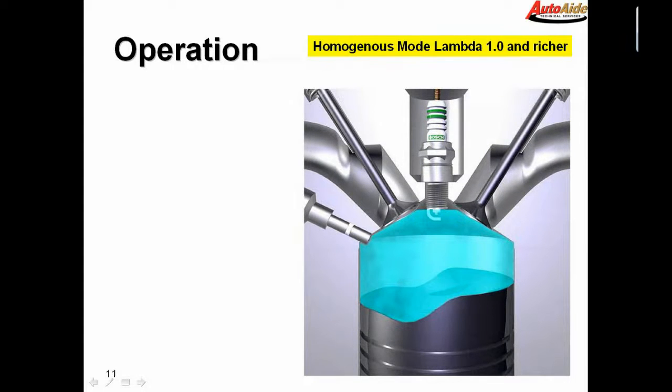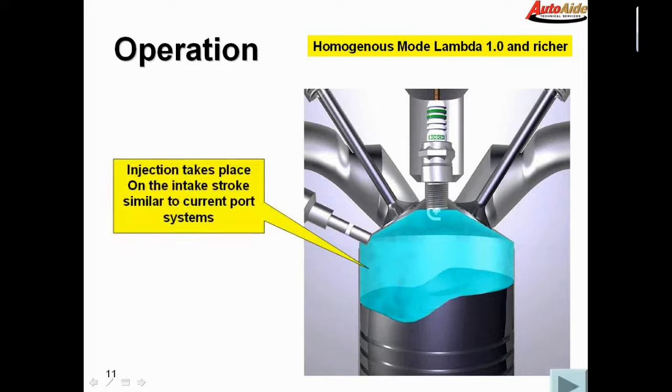It will switch over to homogeneous mode. Homogeneous mode is basically the mode we've been dealing with all along. Stoichiometric or 14.7 to 1 or lambda 1 is homogeneous mode. Anything leaner than 14.7 to 1 is stratified charge mode. When the engine is running in homogeneous mode, injection takes place on the intake stroke, similar to current port injection systems. The engine control system will switch back and forth between the two modes depending on engine load and temperature.